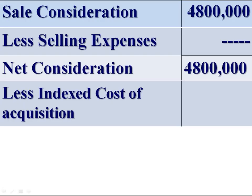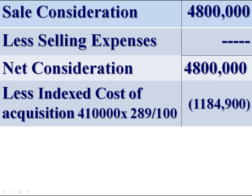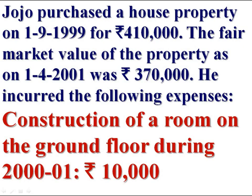Let's calculate the indexed cost of acquisition: rupees 4 lakh 10,000 multiplied by the index for this previous year (289) divided by the index for the previous year 2001-02 (100). We get an indexed cost of acquisition of rupees 11 lakh 84,900.